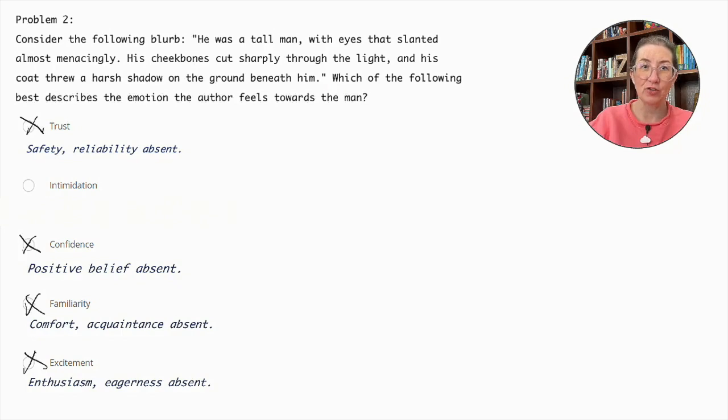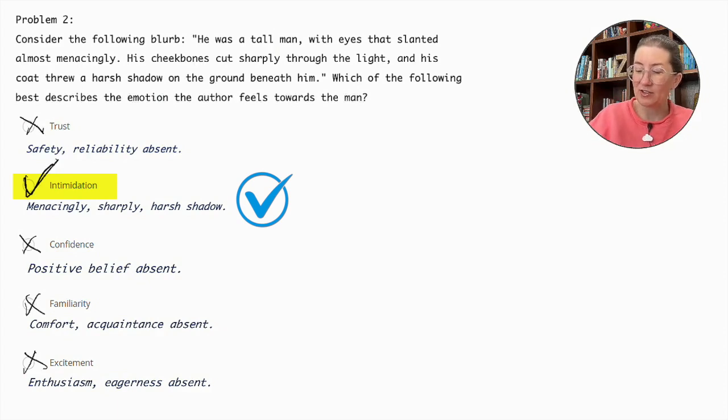The correct answer is intimidation. The use of words like menacingly, sharply, and harsh shadow suggests a sense of threat or fear, indicating that the author feels intimidated by the man.